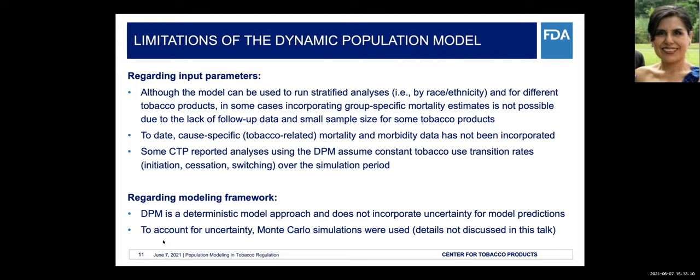Additionally, some CTP analyses using the dynamic population model assume constant tobacco use transition rates — meaning initiation, cessation, and switching rates remain the same across the whole simulation period. As CISNET estimates show, initiation and cessation vary across time, but this modeling framework has not yet accounted for those time-varying changes in parameters.